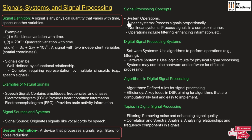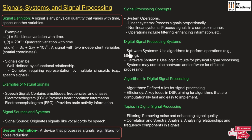Signal processing concepts depend upon the system operations. A linear system processes signals proportionally, while non-linear systems process signals in a more complex manner. Examples of signal processing operations include filtering a signal and enhancing information. Digital signal processing uses software systems that employ algorithms to perform operations such as filtering of a signal.